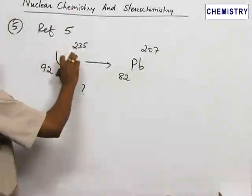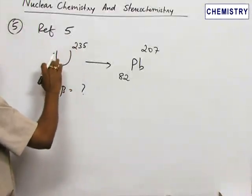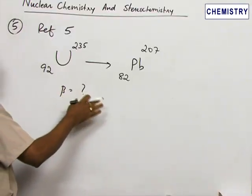Refer problem number 5. This is in continuation of the previous problem only. Here, we are going to calculate the number of beta particles emitted.